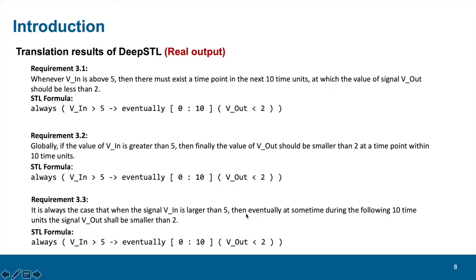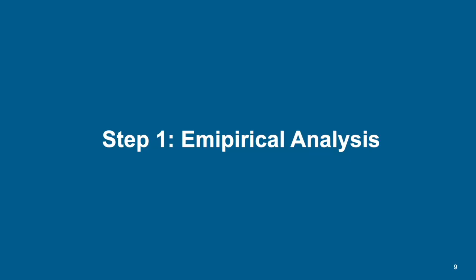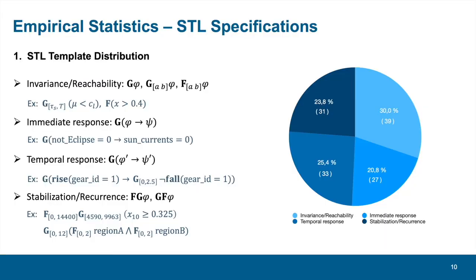For the third example, the translator is designed to be able to accept synonymous English utterances, as shown in the slide, and output the same STL formula. Okay, then let's go step-by-step to see how this translator is built. The first step is empirical analysis.